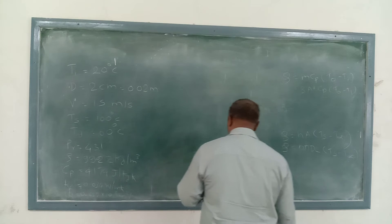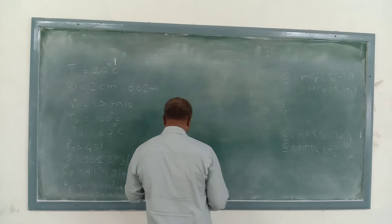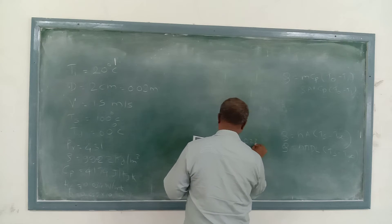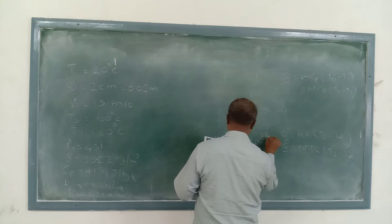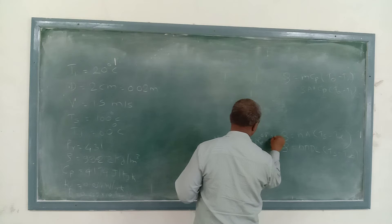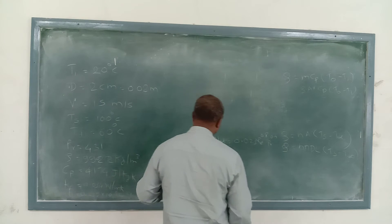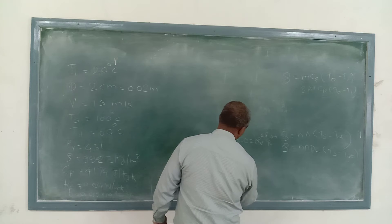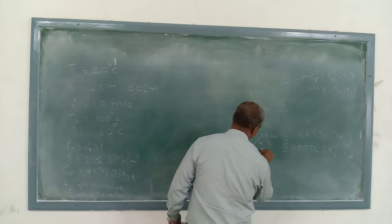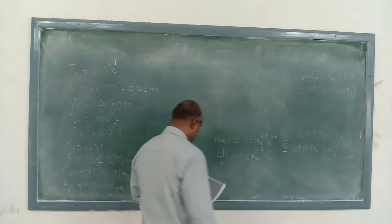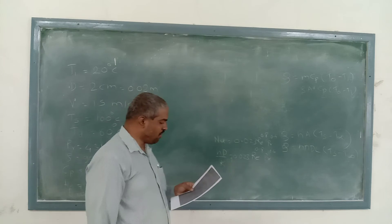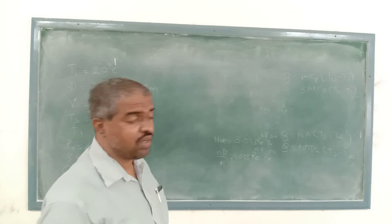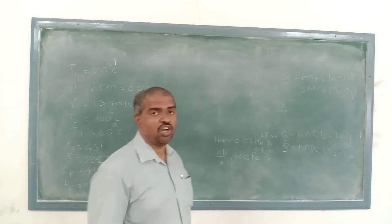Next, we need to find H. To calculate H, we use the Dittus-Boelter relation: Nu = 0.023·Re⁰·⁸·Pr⁰·⁴, where Nu = H·D/K. However, this equation applies when flow is turbulent, so we must first verify whether the flow is turbulent or laminar by calculating the Reynolds number.